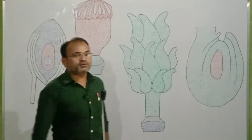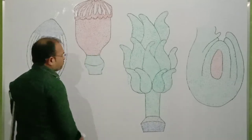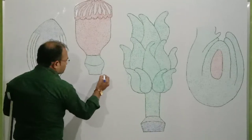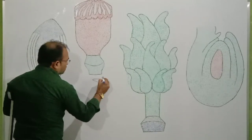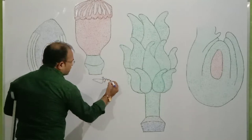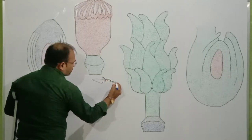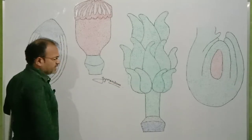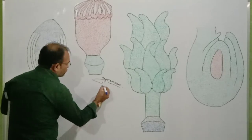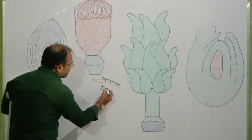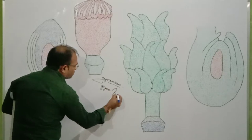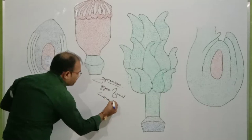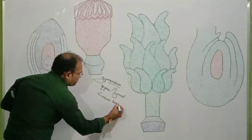The female reproductive part of the flower is called the gynoecium. Gynoecium is called the female reproductive part of the angiospermous plants. 'Gyno' indicates female, and 'oecium' means bearing.